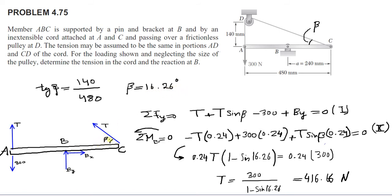Then I drew the free body diagram of the system. We have a 300 Newton force downward, and the chord force T assumed upward at A. We also have T at angle beta toward point D applied at C, and two components of the reaction force at B: a horizontal component Bx and a vertical component By.